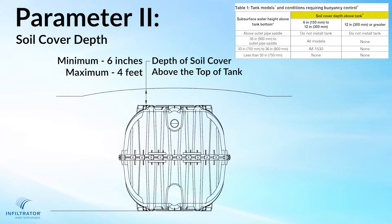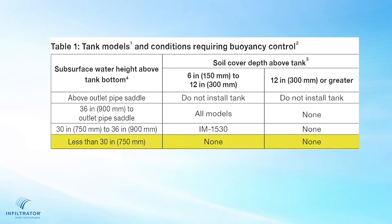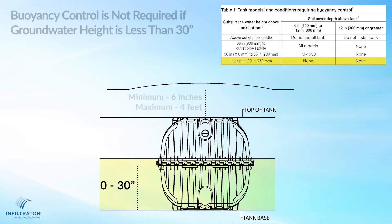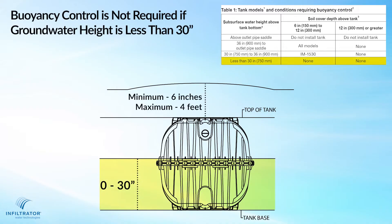The minimum amount of soil cover above the top of the tank is six inches and the maximum is four feet. In areas where there is less than 30 inches of uninterrupted saturated soil conditions, buoyancy control is not required when the soil cover depth is within the acceptable range of six inches to four feet.